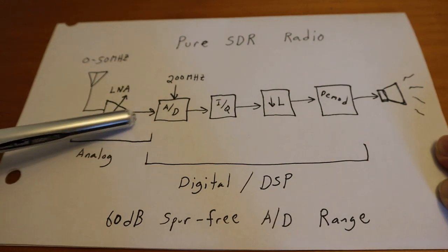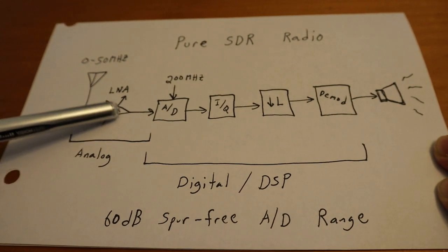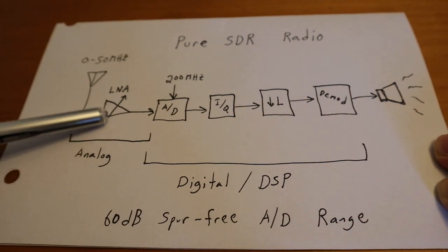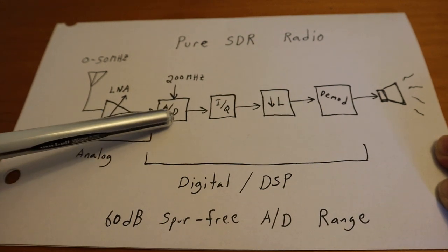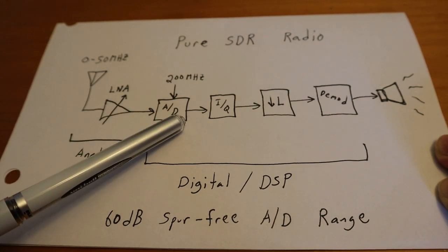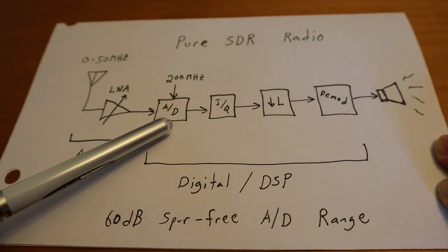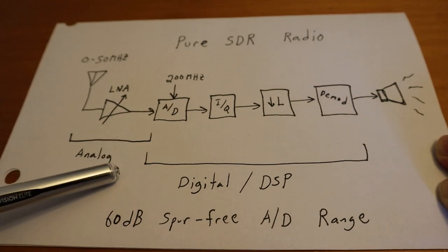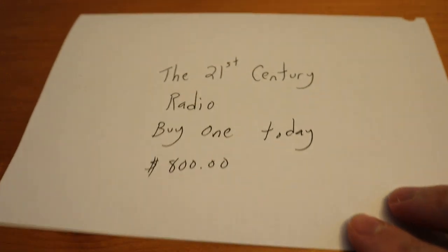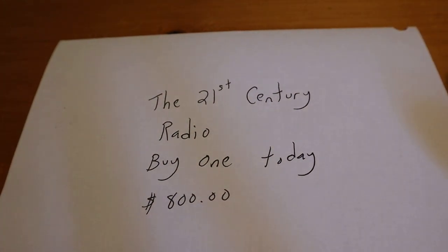Management of course loves it because we don't need any expensive analog hardware anymore, no more filter tuning, no more adjustment, and they all think it's the best thing ever. They'll go ahead and buy the Xilinx chip for about 50 bucks, put it all in firmware, and then charge you the customer about $800 and say it's the latest thing in the 21st century radio, buy one today.